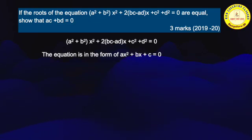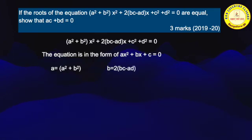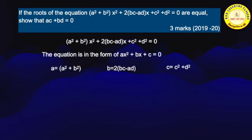Therefore, our first task is to identify the value of a, b, and c in this given equation. Here, a is the coefficient of x², b is the coefficient of x, and c is a constant number. So, a = (a² + b²), b = 2(bc - ad), and c = (c² + d²). Now we know the values of a, b, and c.